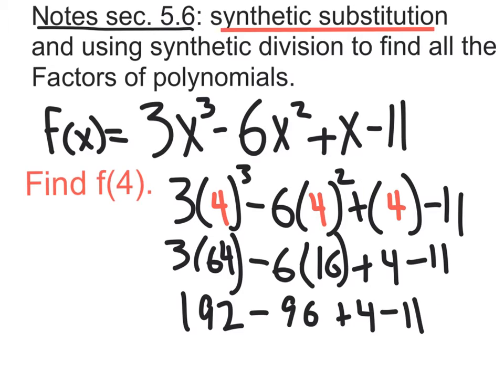Let's continue working this out. 192 minus 96, what's that? 96. So you actually get 96 plus 4, which is 100 minus 11, which is 89, correct? So f of 4, that's saying when you plug in 4, we get what answer? 89.